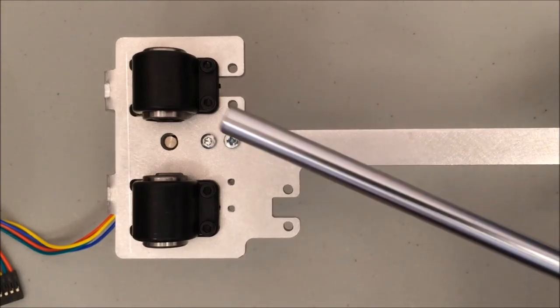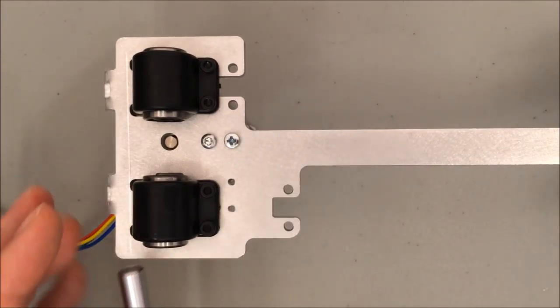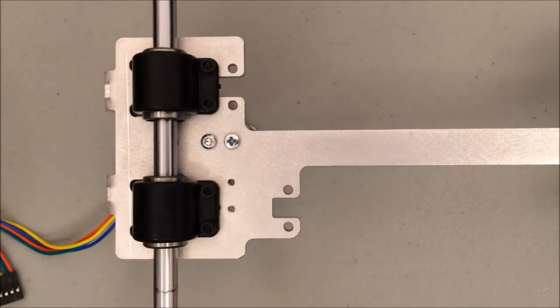All I need to do is take one of the smooth rods I haven't used yet and slide it through these two bearings. The alignment should be spot-on because it's cut out of a metal piece and there's really no room for it to be misaligned. However, it's still worth checking.